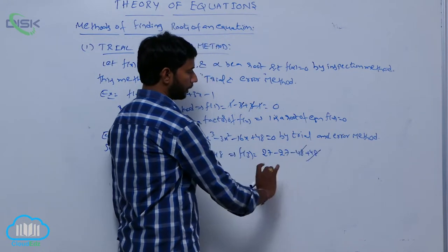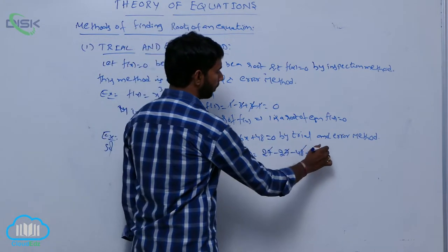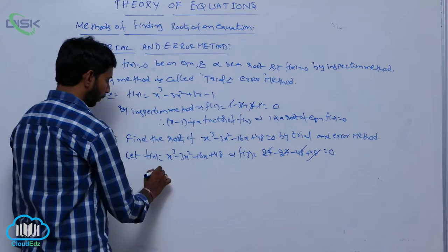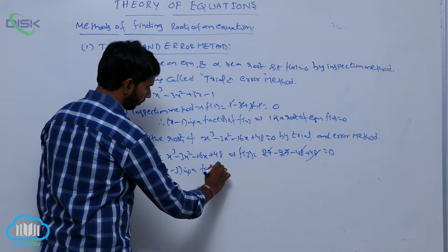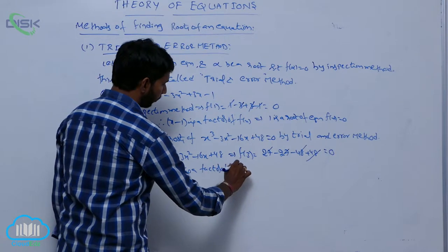Here -48 + 48 gets cancelled, and 27 - 27 gets cancelled. Therefore, x - 3 is a factor of f(x).